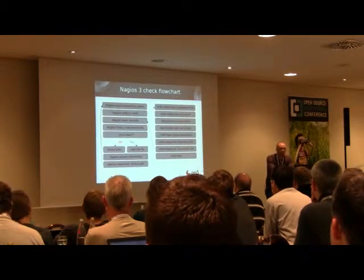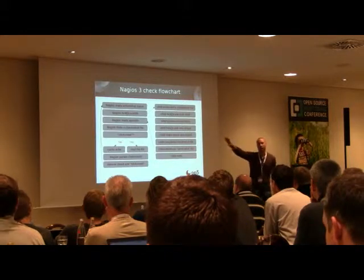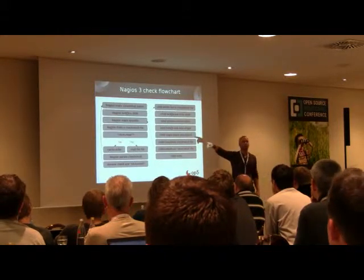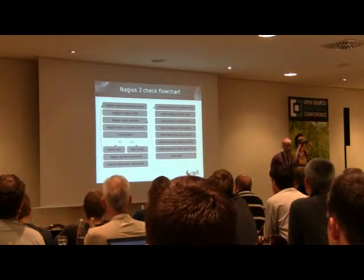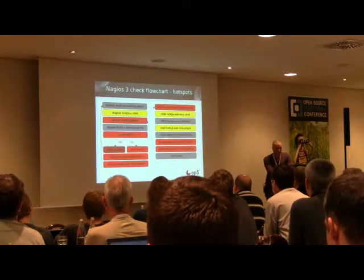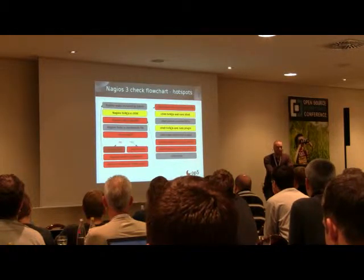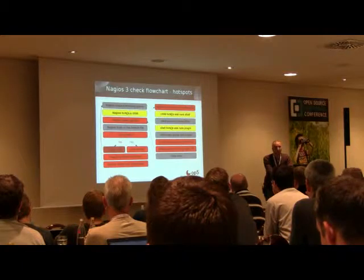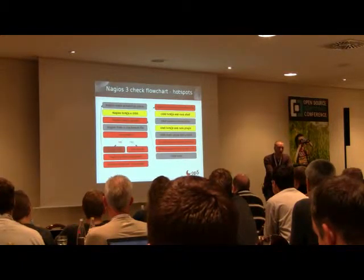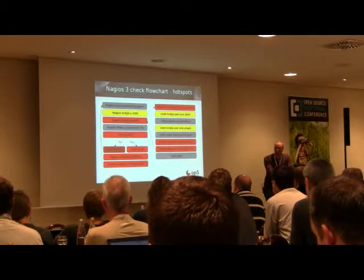The Nagios 3 check flowchart works like this: Nagios reads the scheduling queue and forks a child. On the right side is what the child does; on the left is what the main Nagios process does. If you turn it to show where we access the disk — the red areas — and the yellow areas are where we do memory-intensive and CPU-intensive system calls. It's not really stellar.